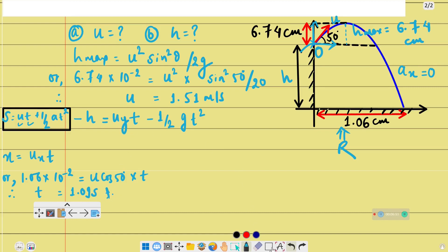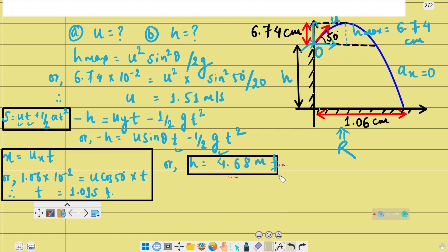So -h = u sin θ × t - ½gt². With the values of t, g, and u sin θ, I can calculate h. After the calculation, the answer is 4.68 meters. This is our final result for the height of the cliff.